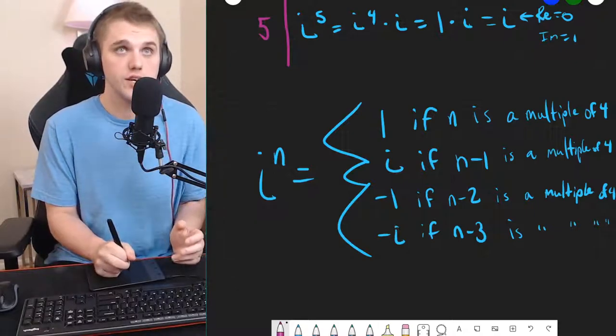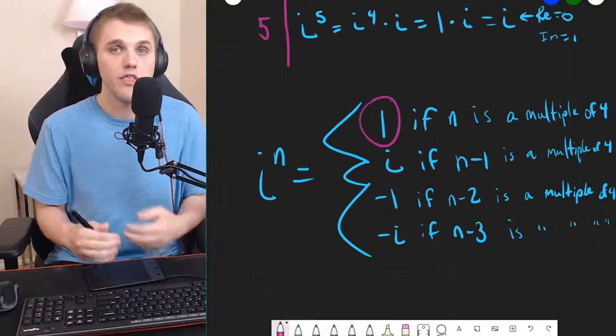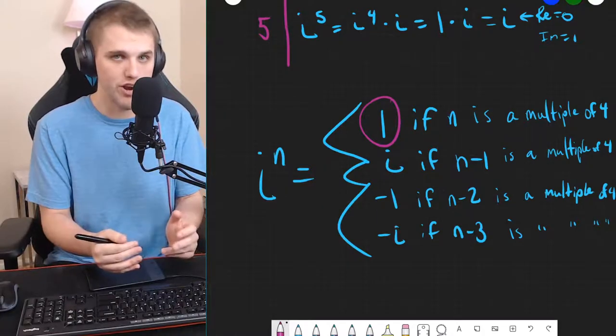So, let's go through each case. If i to the n is 1, then the real part is 1, and the imaginary part is 0.